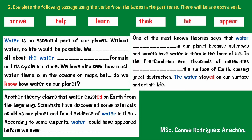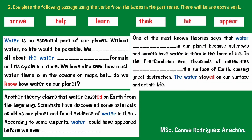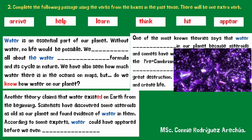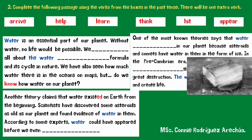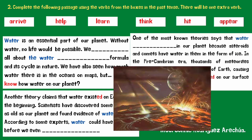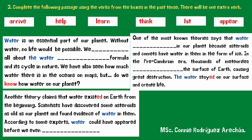One of the most well-known theories says that water arrived on our planet because asteroids and comets have water in them in the form of ice. In the pre-Cambrian era, thousands of meteorites hit the surface of Earth, causing great destruction. The water stayed on our surface and helped create life.